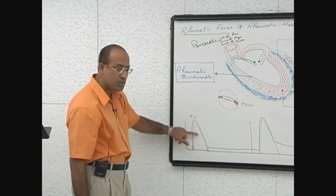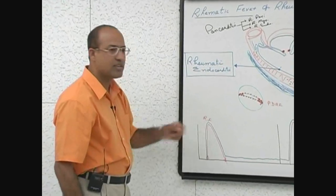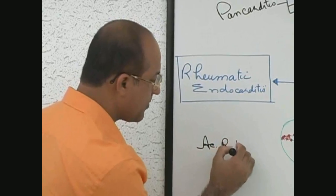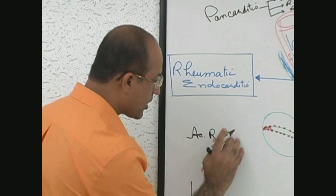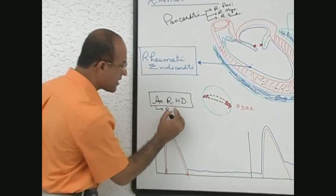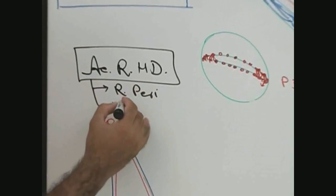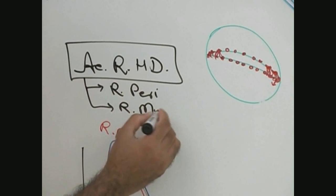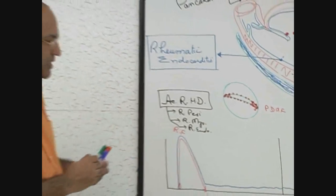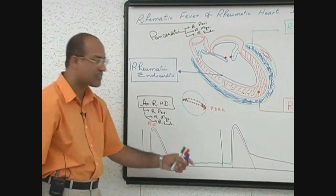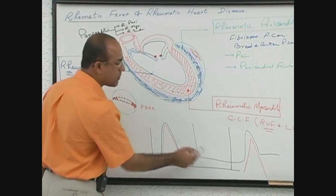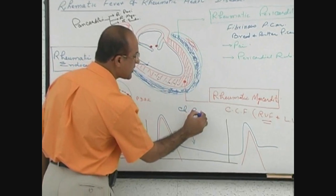During the fever, all the problems which are present in the heart are called acute rheumatic heart disease. Acute rheumatic heart disease may be rheumatic pericarditis, rheumatic myocarditis, or rheumatic endocarditis. But when repeated attacks come and endocardial and valvular lesions start forming, this problem which never heals completely is called chronic rheumatic heart disease.